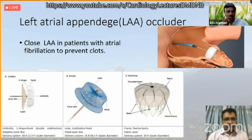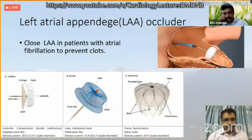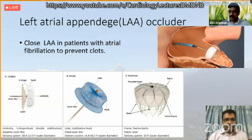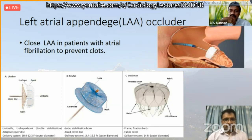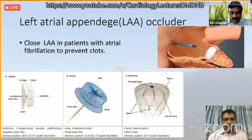We all know that atrial fibrillation patients are at risk of stroke because 90% of clots in AF form in the left atrial appendage. If we close that appendage with an occluder, the chance of stroke decreases. This is a percutaneous intervention where the LAA occluder is placed in the appendage. It is made of nitinol wire and there are multiple designs from different companies. This device is used for stroke prevention in patients who cannot take warfarin or are contraindicated for warfarin therapy.